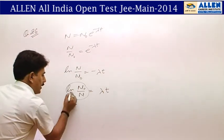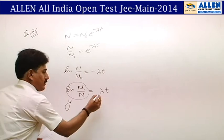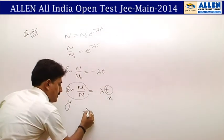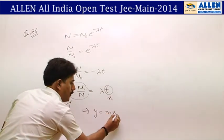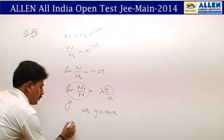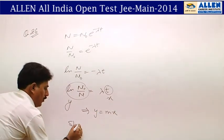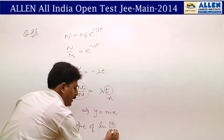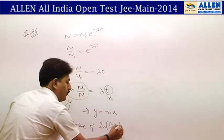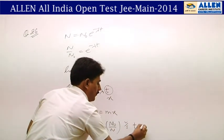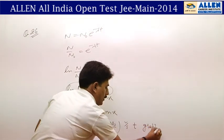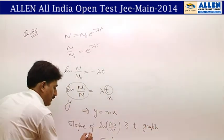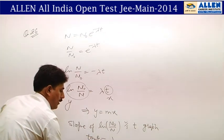If we take ln(N₀/N) on the y-axis and t on the x-axis, this represents the equation y = mx, meaning the slope of the ln(N₀/N) versus t graph is equal to λ. So tan θ = λ.